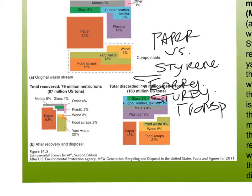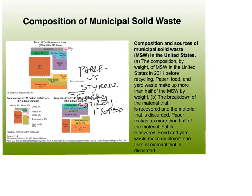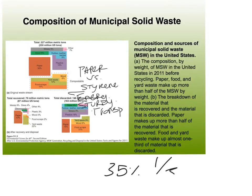Paper, food, and yard waste make up more than half of municipal solid waste by weight. Paper makes up more than half the material that is recovered - 'recovered' is another way to say recycled. Food and yard waste make up almost one-third of material that is discarded. We end up recycling about a third of our stuff - specifically 35% according to the book. In Japan, an island nation, they have 50%.